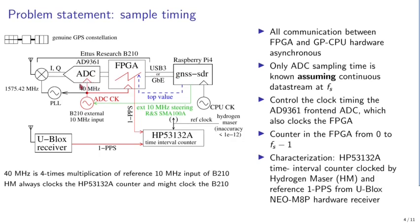The only timing information we know is at the ADC. So if we wish to steer a clock with the time information generated by GNSS-SDR, it will not be the CPU clock we can affect, but the clock that clocks the A-to-D converter. Fortunately, on the B210 front-end it is the same clock that clocks the FPGA. So we implement a counter in the FPGA that counts from 0 to FS−1 (the sampling frequency), and this generates the 1 pulse per second.